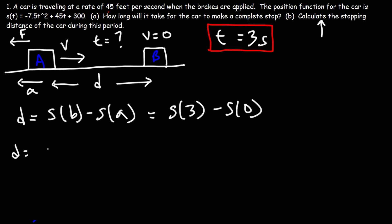So let's calculate S of 3. Let's plug in 3 into the position function. So this is going to be negative 7.5 times 3 squared plus 45 times 3 plus 300. Now, if we plug in 0, we'll have this.